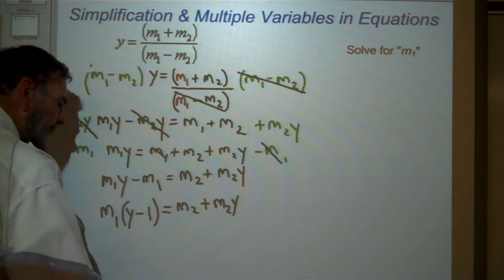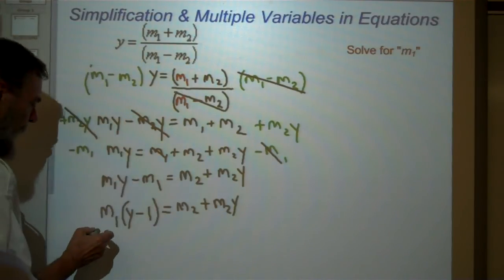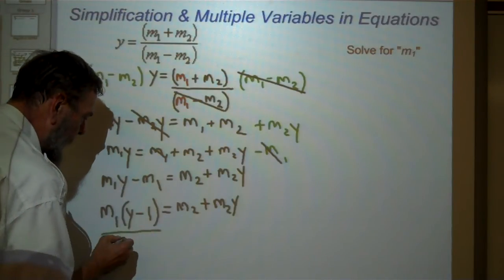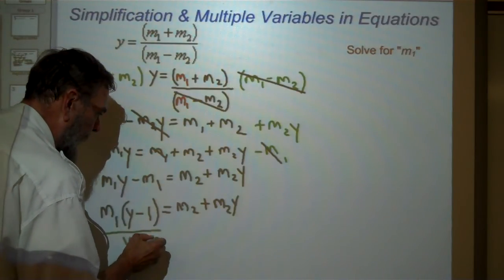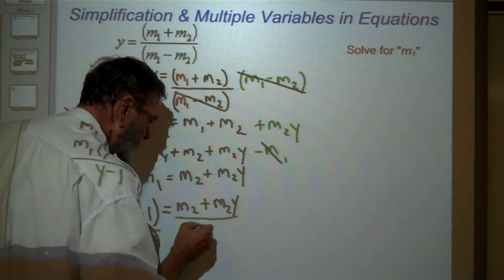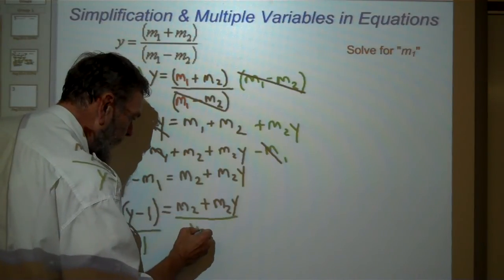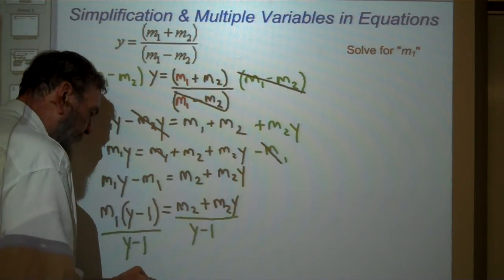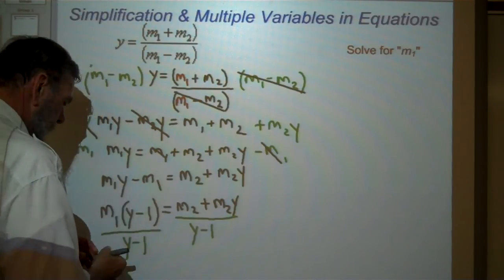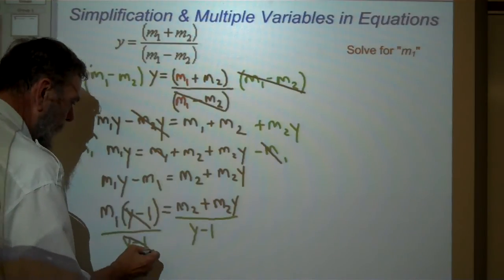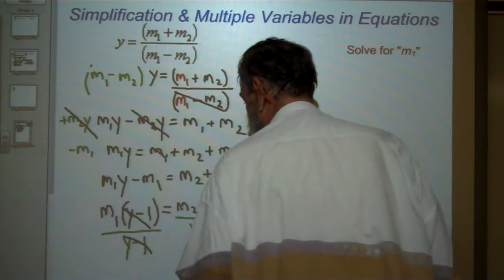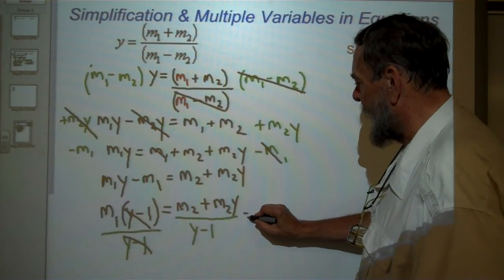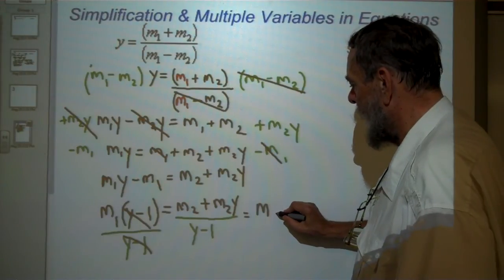Now, what? Last step. We're going to divide everything on this side by Y minus 1. We divide everything on this side by Y minus 1. So this cancels, and I'm left with my answer. This equals M1.